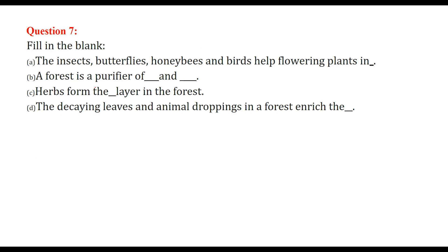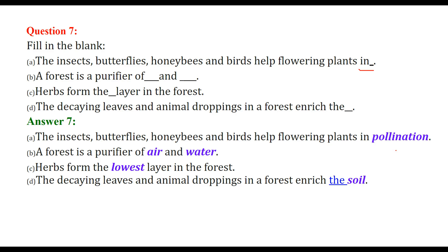Fill in the blanks: The insects, butterflies, honeybees and birds help flowering plants in pollination. A forest is a purifier of air and water. Herbs form the lowest layer in the forest. The decaying leaves and animal droppings in a forest enrich the soil.